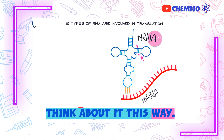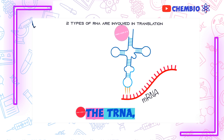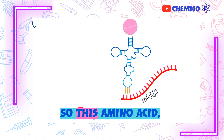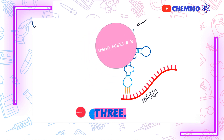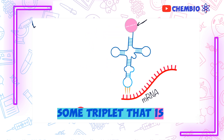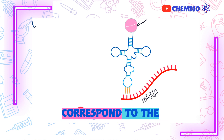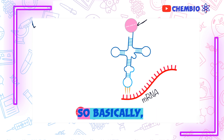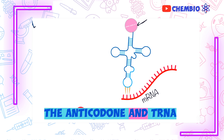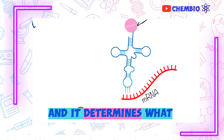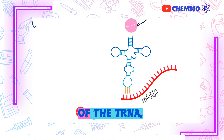So what's the point of this codon-anticodon pairing between those two types of RNA? Remember, there's an amino acid always attached at the top end of the tRNA. That amino acid corresponds to some triplet found on the tRNA itself, which in turn corresponds to the triplet on the messenger. So basically, the codon on messenger RNA determines the anticodon on the tRNA, and it determines the identity of the amino acid on the other end of the tRNA.